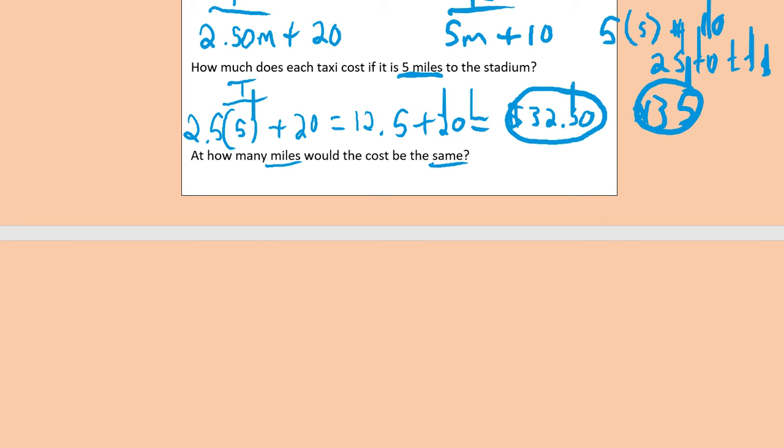And when we wrote the expressions up here, we used m for miles. And then it says, would the cost be the same? Same in math is equal. So what you do is you set the two expressions equal to each other. You say 2.5m plus 20 is equal to, that means same, 5m plus 10.